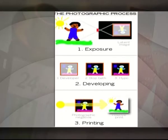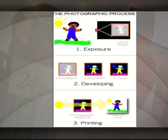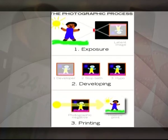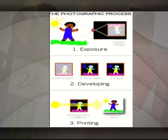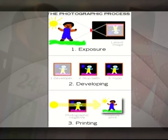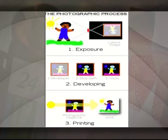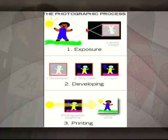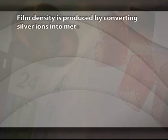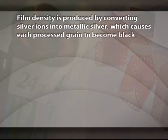Photographic process. The production of film density and the formation of a visible image is a two-step process. The first step is the exposure of the film to light, which forms an invisible latent image. The second step is the chemical process that converts the latent image into a visible image with a range of densities or shades of grey. Film density is produced by converting silver ions into metallic silver, which causes each processed grain to become black.